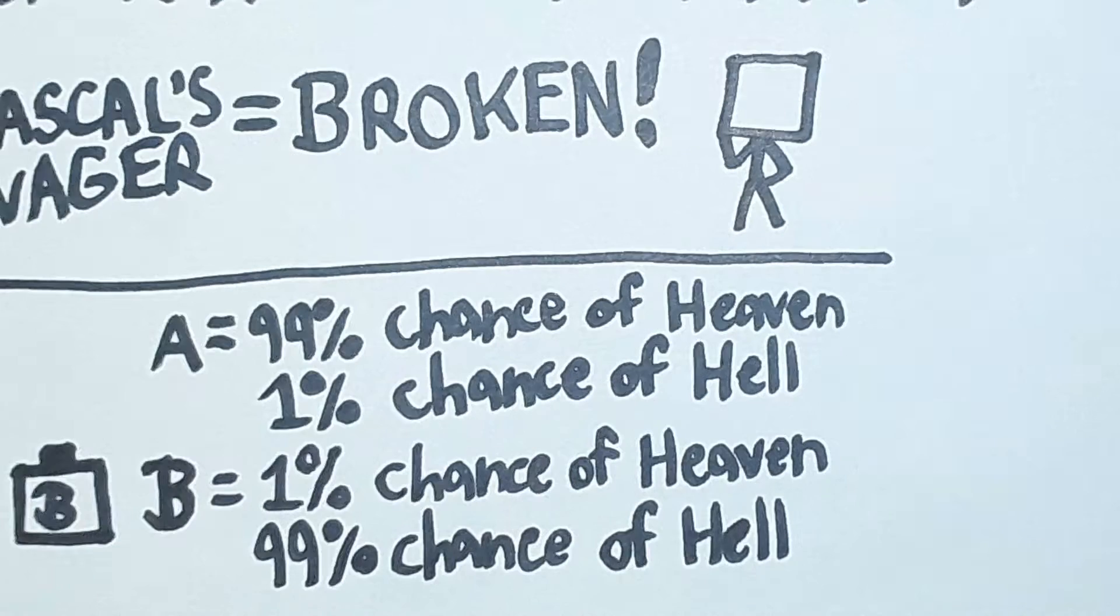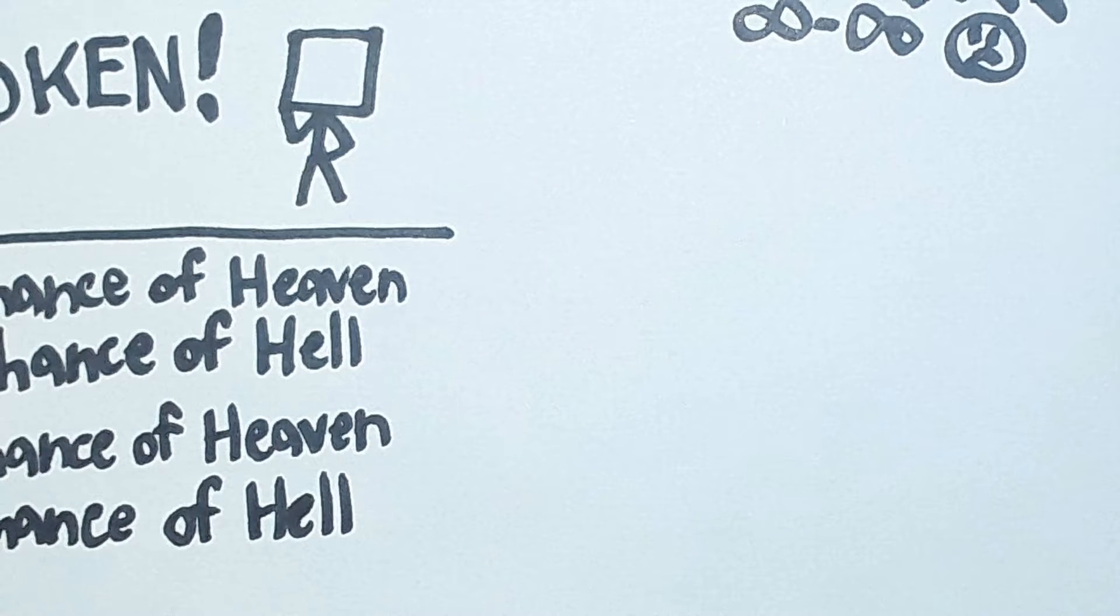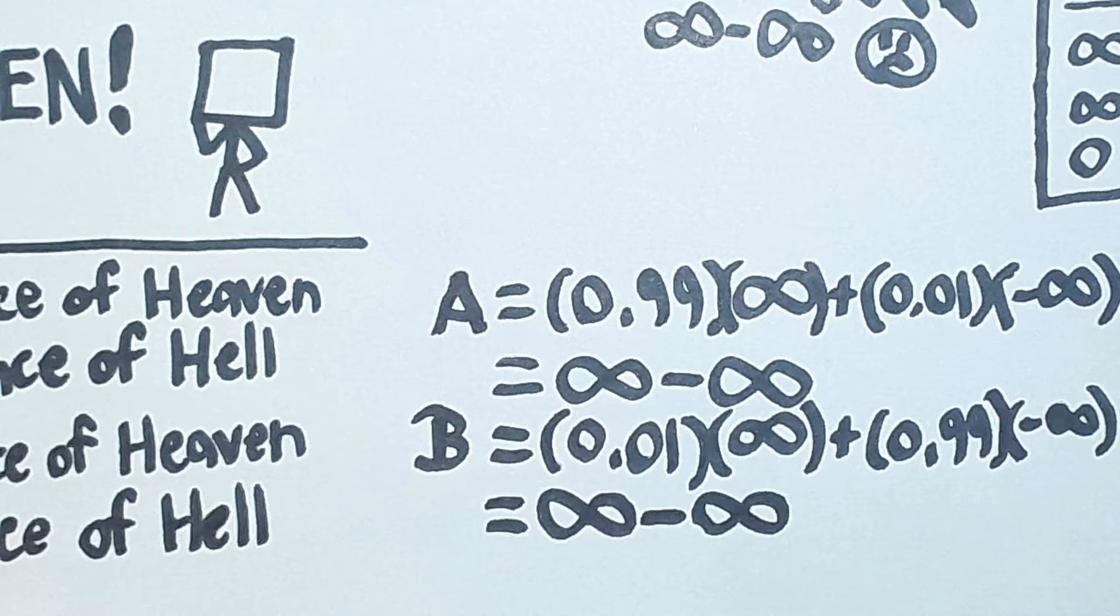What's the expected utilities of pressing buttons A or B? Well, if we work out the math, then the infinities obliterate the finite probabilities and the expected utility of pressing each button is infinity minus infinity.